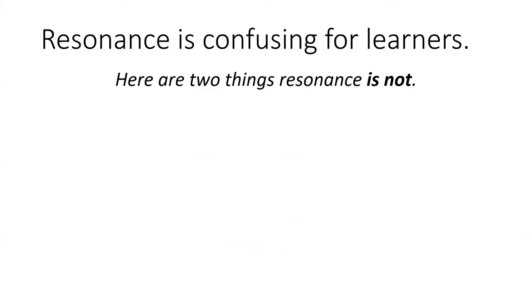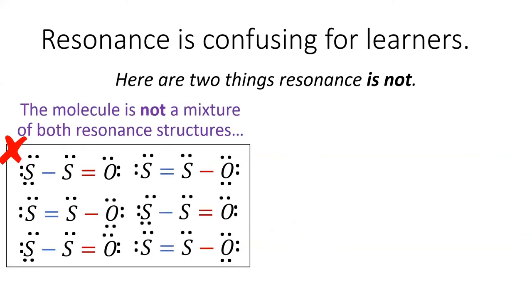Resonance is a confusing concept for learners. In fact, it's a confusing concept for professors, too. Here are two common mistakes people make when trying to understand resonance. First, resonance does not mean that a sample of S2O is a mixture of both resonance structures. If this were true, we would be able to separate the mixture out based on physical properties, but we cannot do this.